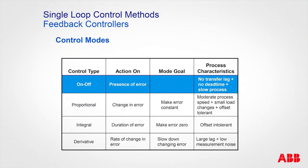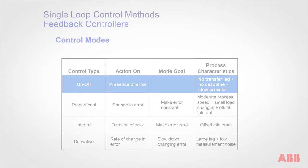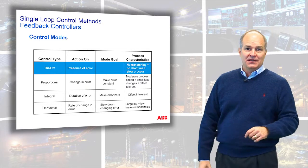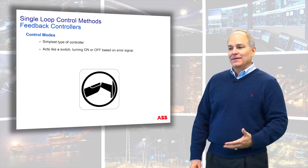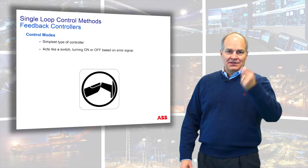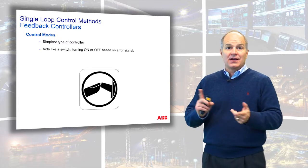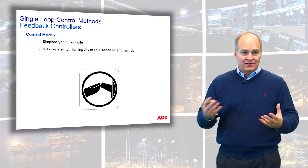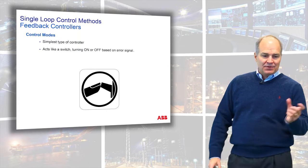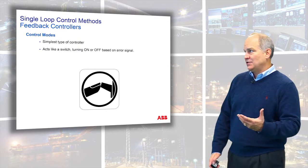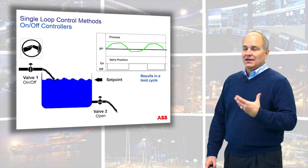The on-off controller type is basically like a light switch — it's either on or it's off — or a relay, either open or closed. It operates off the presence of error: whether the error is large or small, you're at 100% or 0% of your valve. So on-off control is a very simple two-mode kind of output, and it's usually used in very large vessels where the dynamics are very, very slow.